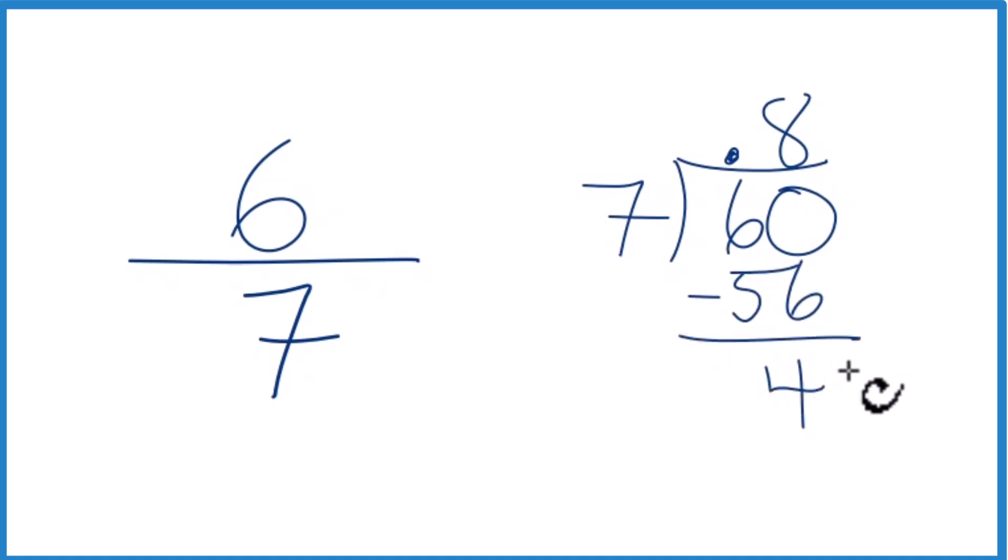7 doesn't go into 4. Call it 40. We'll move over 1. 5 times 7, that's 35. We subtract, we get 5.